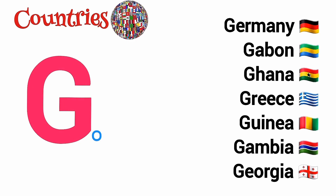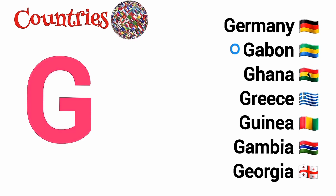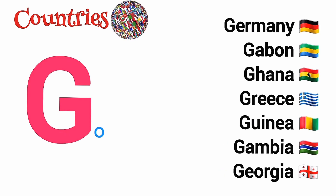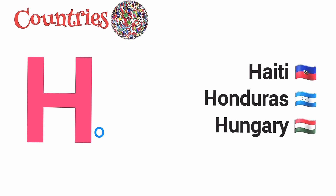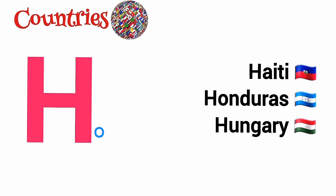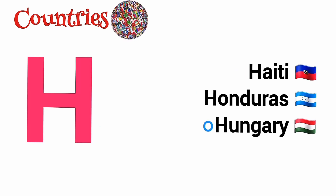G is for Germany, Gabon, Ghana, Greece, Guinea, Gambia, Georgia. H is for Haiti, Honduras, Hungary.